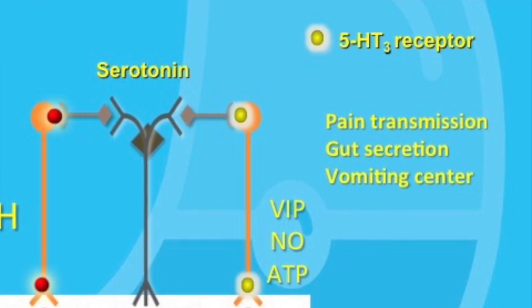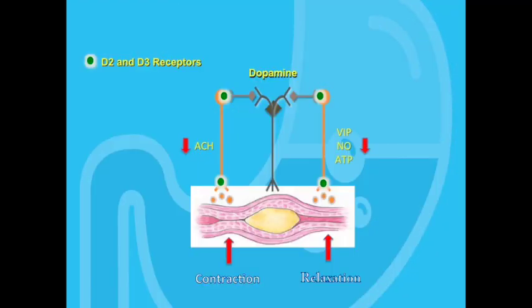Dopamine is released by sympathetic nerves, and its main receptor in the gut is the D2 dopamine receptor. Think of dopamine as a brake on the entire peristaltic reflex. When dopamine is released in response to sympathetic stimulation, it reduces ACH secretion by cholinergic nerves, and it also leads to reduced activity in the VIP-, nitric oxide-, and ATP-containing nerves.